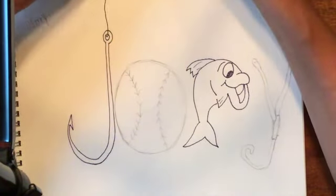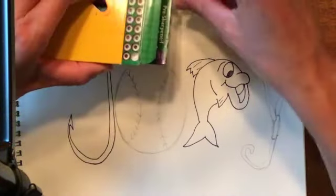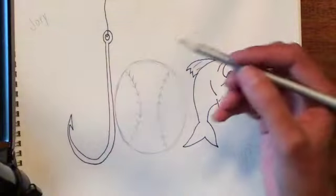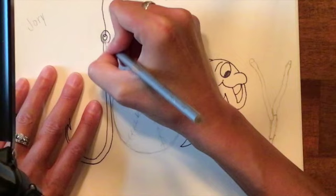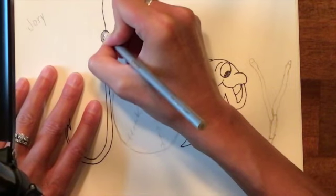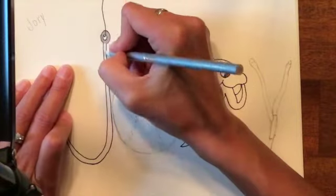I did happen to get a box of colored pencils that had a metallic silver in it. So I am going to use that to make my fishing hook, and I'm going to color it in nice and neatly.